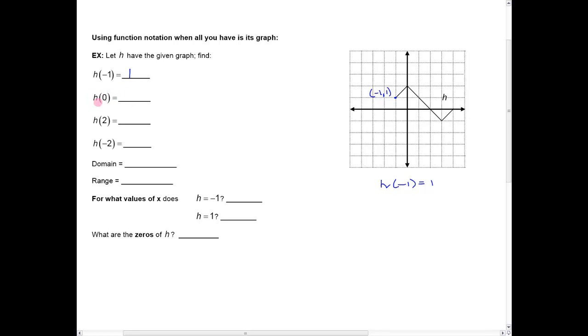Likewise, h of 0 is saying, hey, tell me the output, the y value when the input or x value is 0. So at x equals 0, you can see that this is the ordered pair 0, 2. So that means that h of 0 has to equal 2.